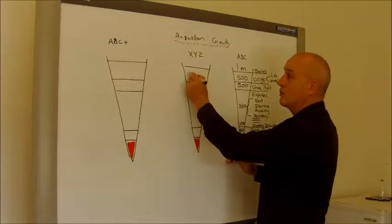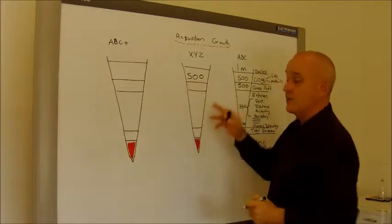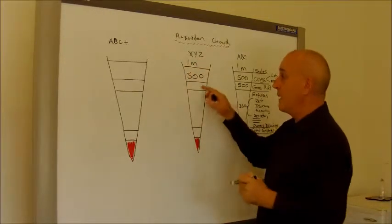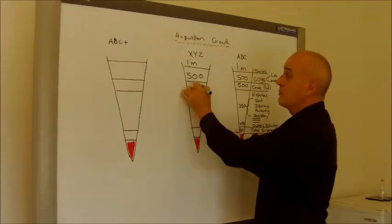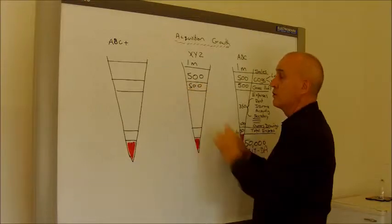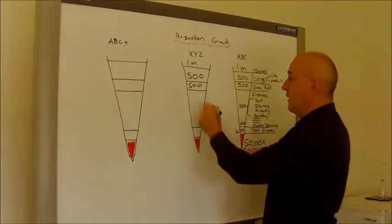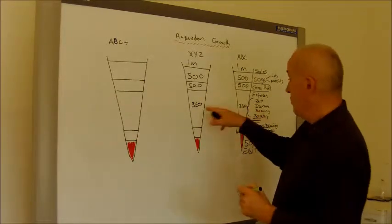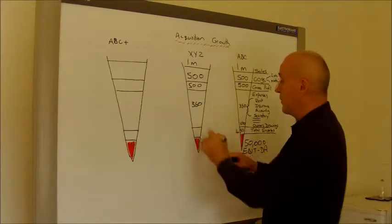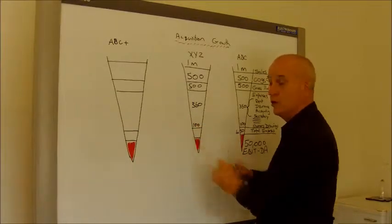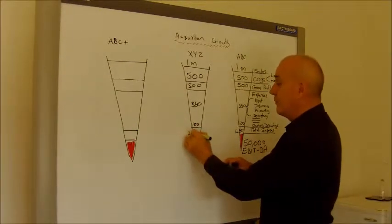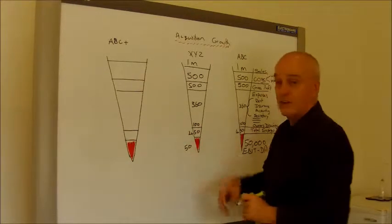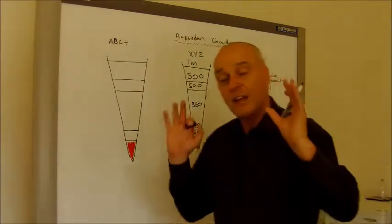So we now found this business we want to buy. It has got the same cost of goods that we've got, $500,000. They do the same as us and they sell those goods and labor for a million. That leaves them with $500,000 to run the rest of the company. They've got $350,000 of expenses to run out of their business. Their owner also takes $100,000 in salary, giving them $450,000 of total expenses, and again they've got $50,000 net profit. So far they're exactly the same as yours.